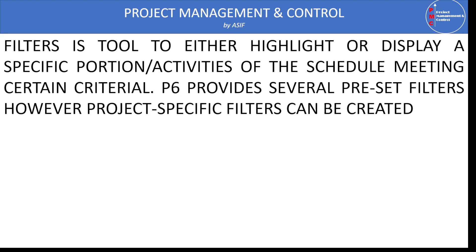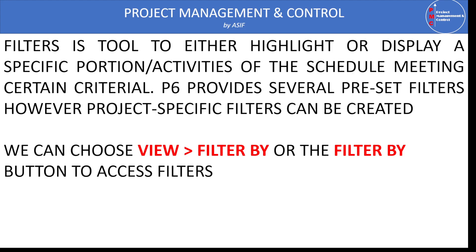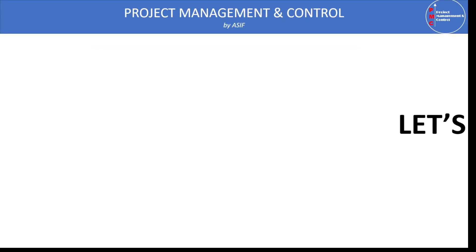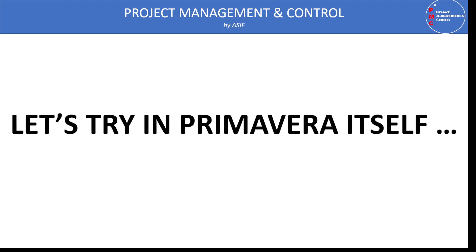So let us see how we can access filters in Primavera P6. To access the filters, we have to open the program and go to the View menu. In the View menu there is one option which is 'Filter By', or alternatively we can click on the filter icon on the main menu bar. When we click on the filter icon, the filter dialog box will open and we can use a predefined filter or create our own.